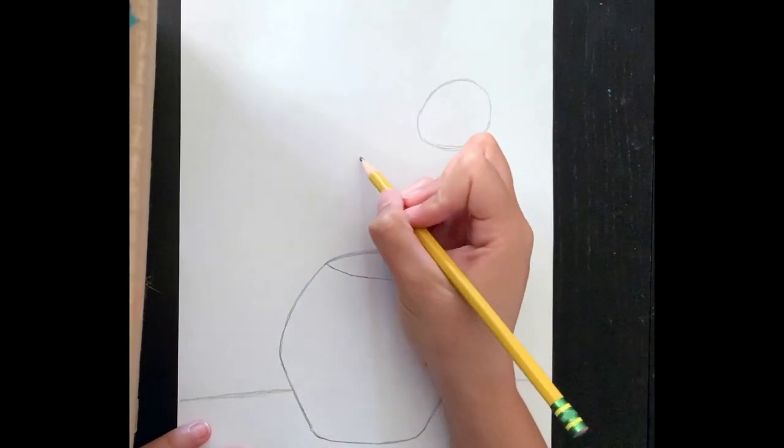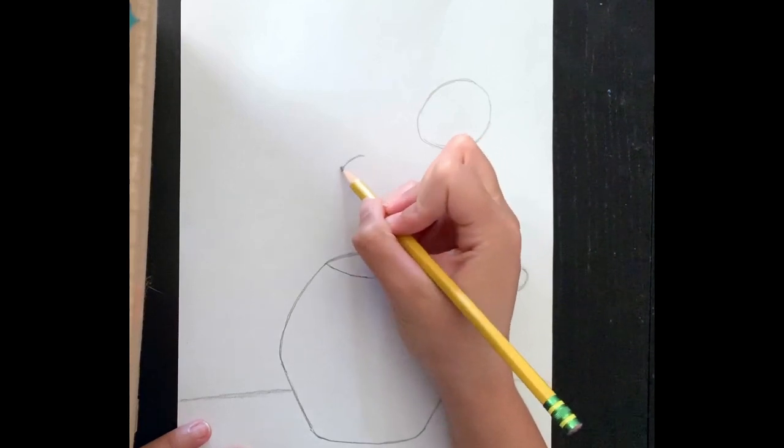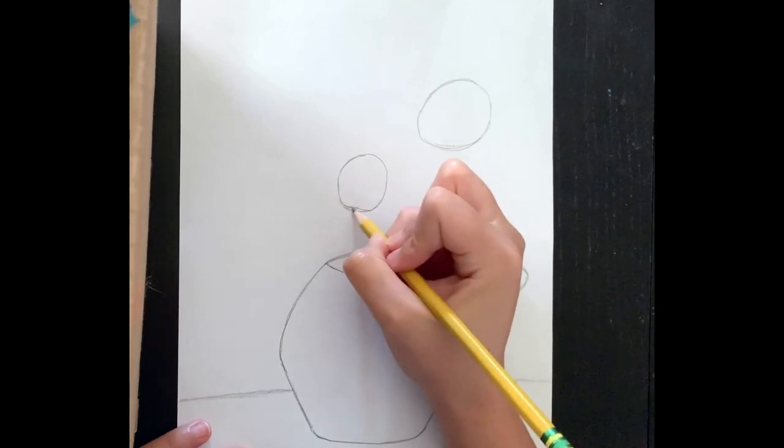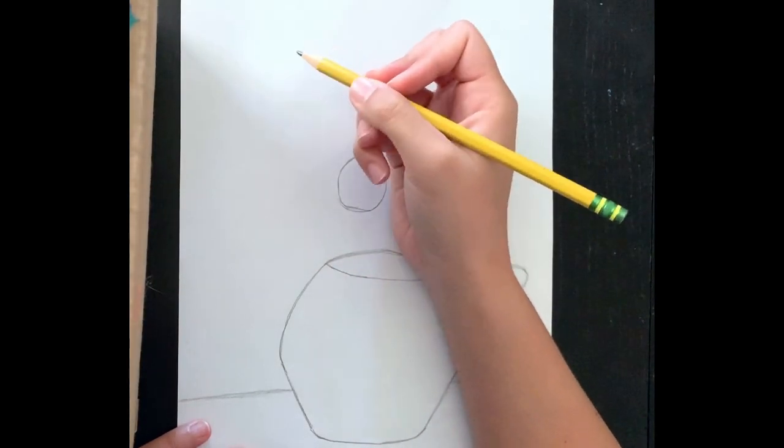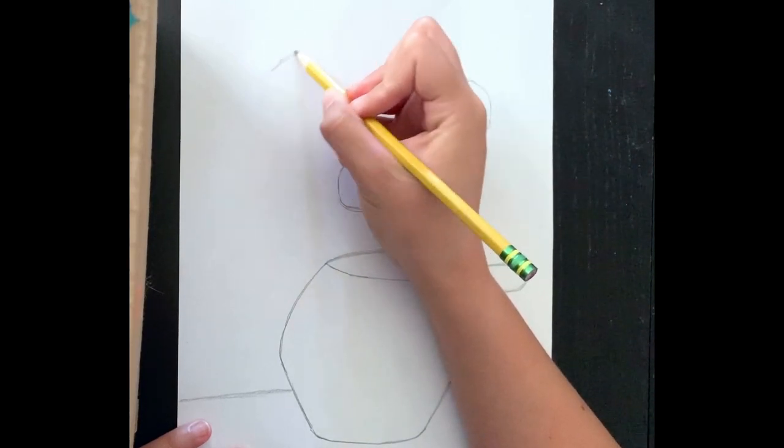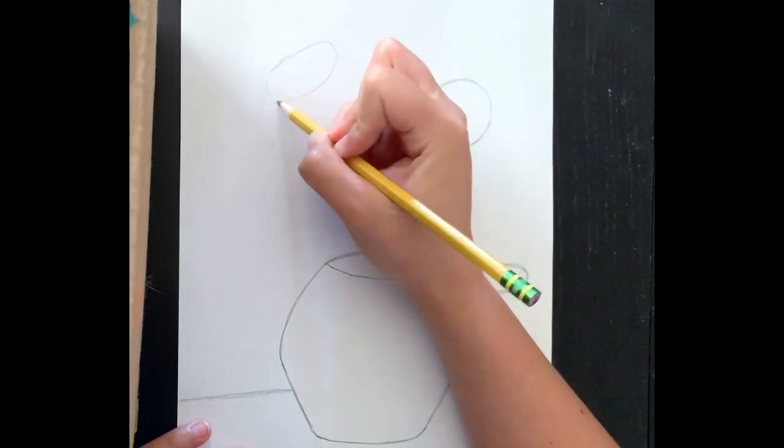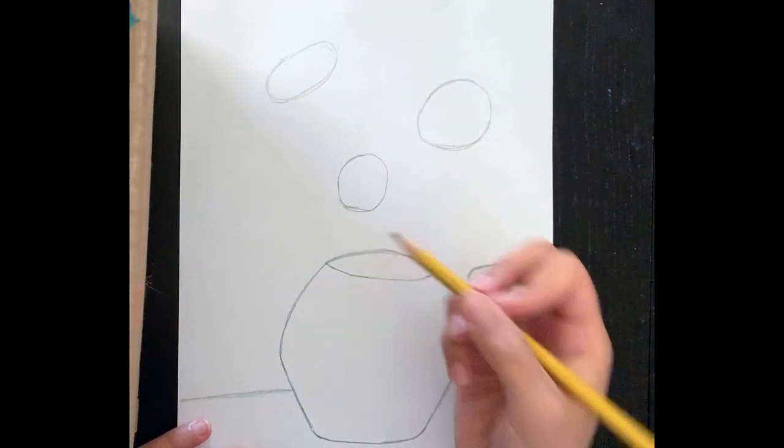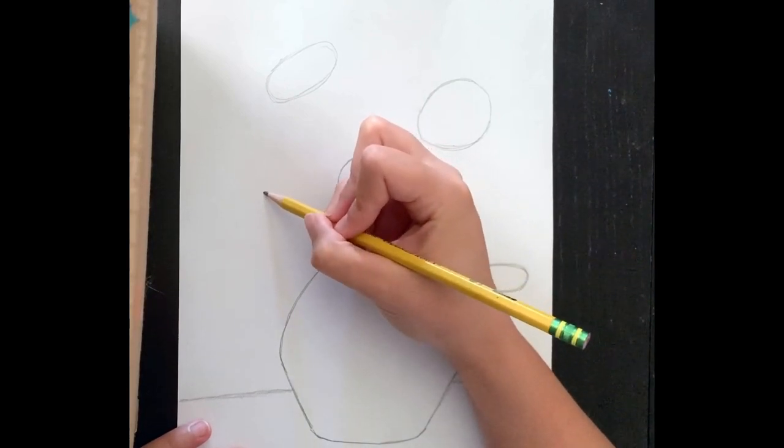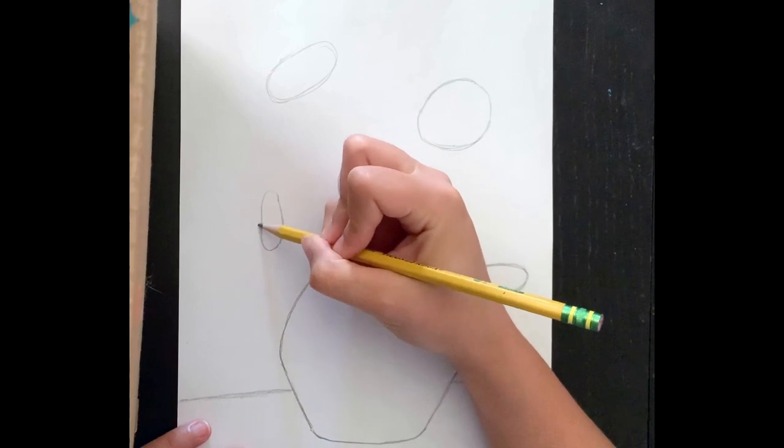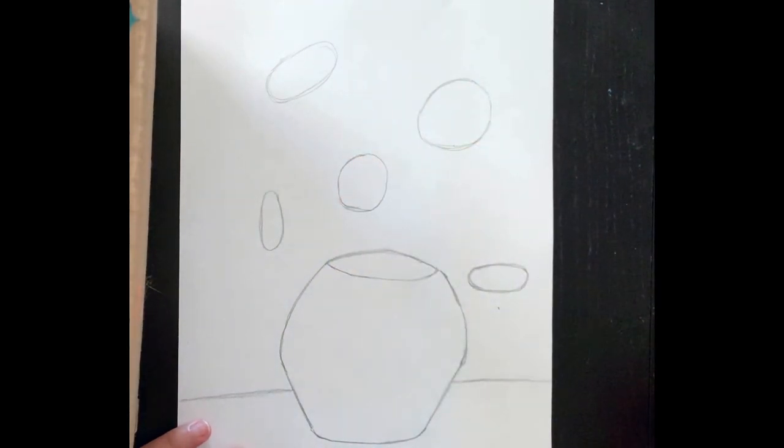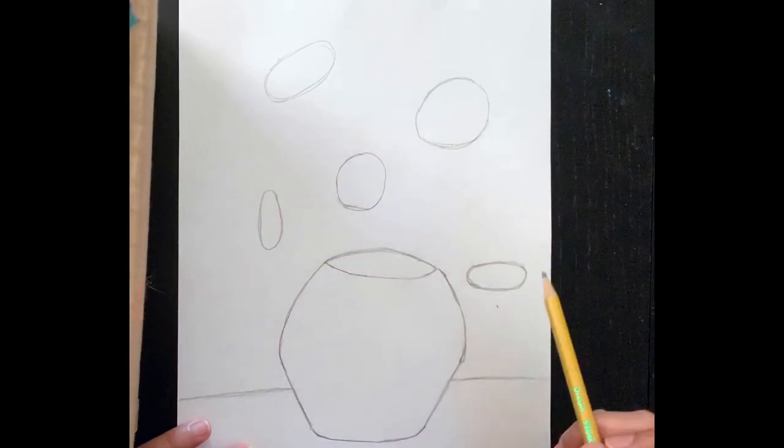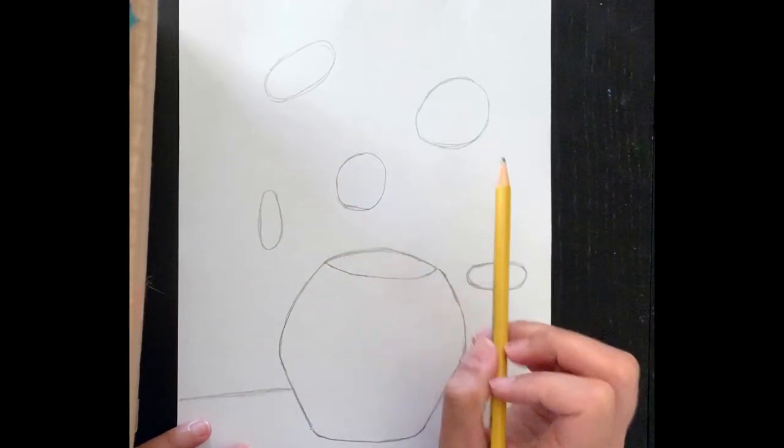So we have the start of two sunflowers so far. Let's do a third right over here. And then a fourth. Let's do another oval. So we have four sunflowers and a fifth right here. One more. Okay, so we have the base of where we want our sunflowers to be. Each sunflower is starting out as an oval or a circle. That's the middle of the sunflower.